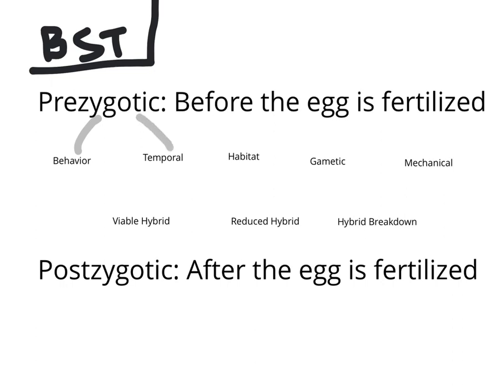Temporal is also prezygotic because the species would mate at different times, meaning that they could not mate together. A habitat barrier means that they live too far away, so they will never mate — it just won't happen.